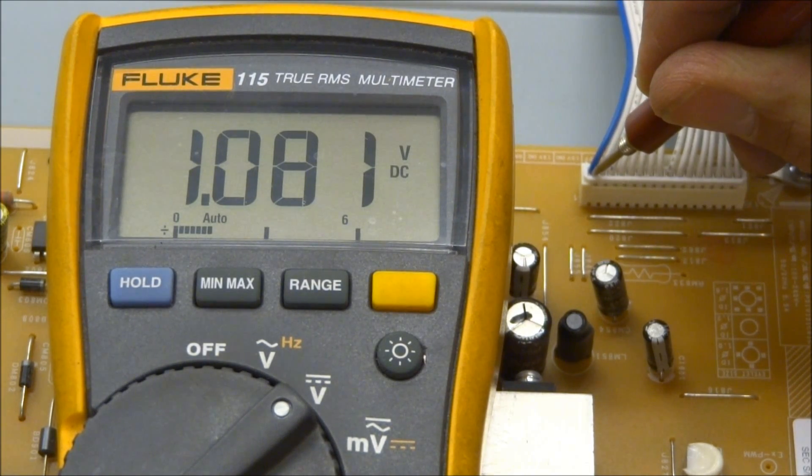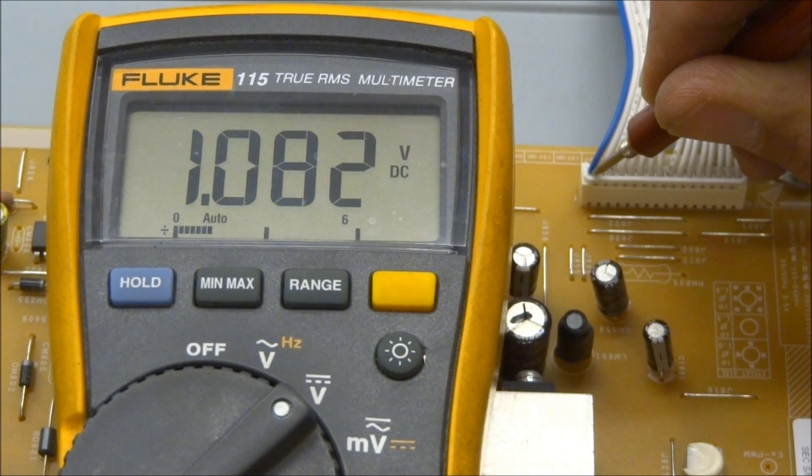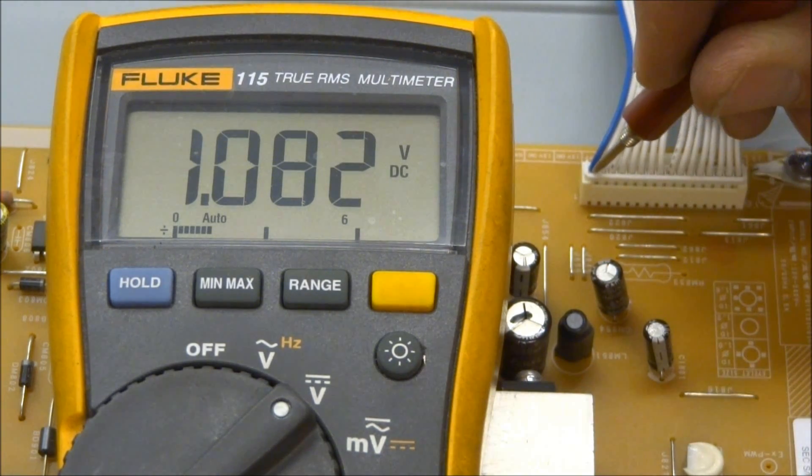So I would advise you, using a resistor, if you're going to force the power supply on, use about somewhere between a 500 ohm and a 1K resistor between pin 1 and pin 2 to force this power supply on. So let's look at the other voltages here.